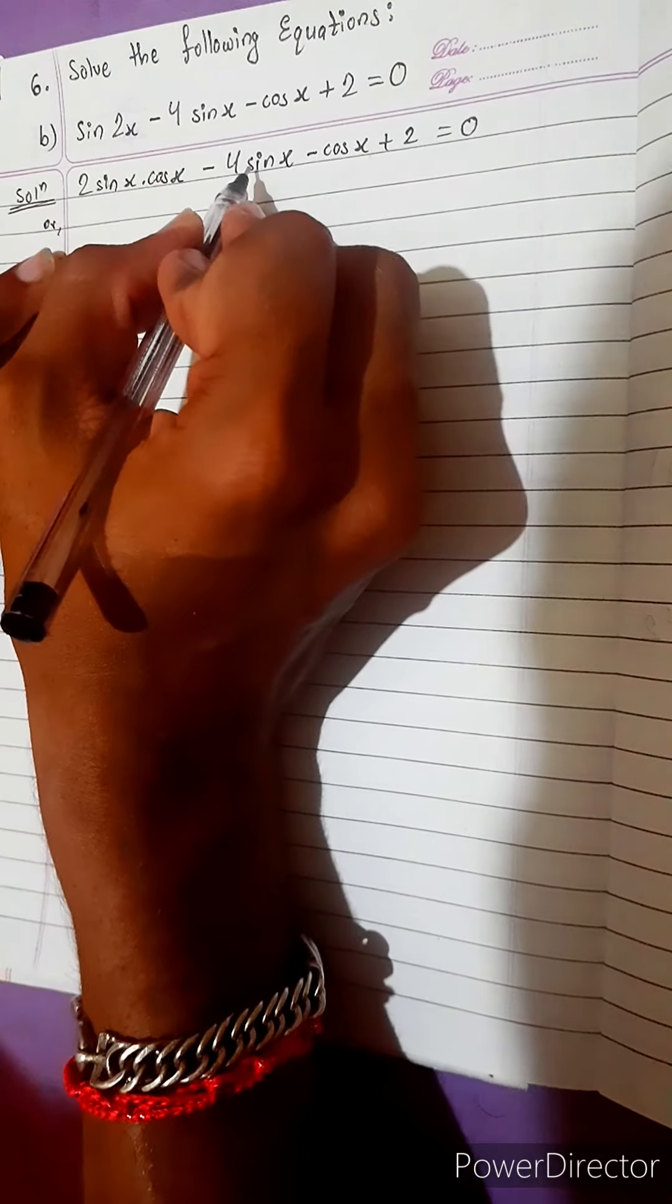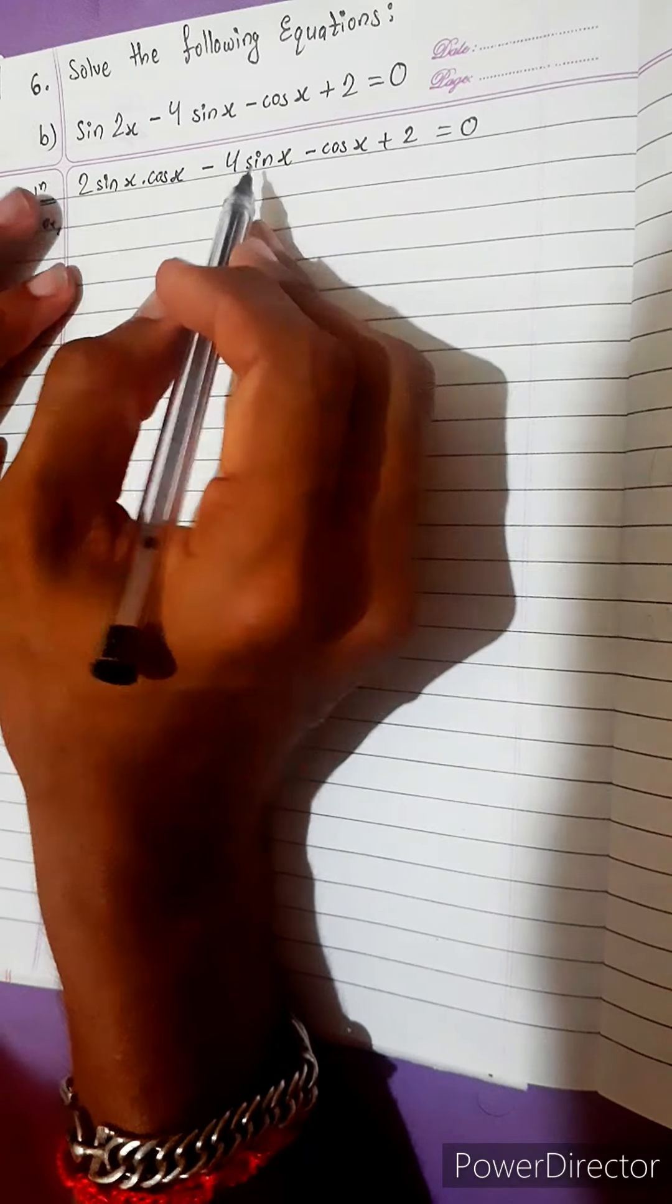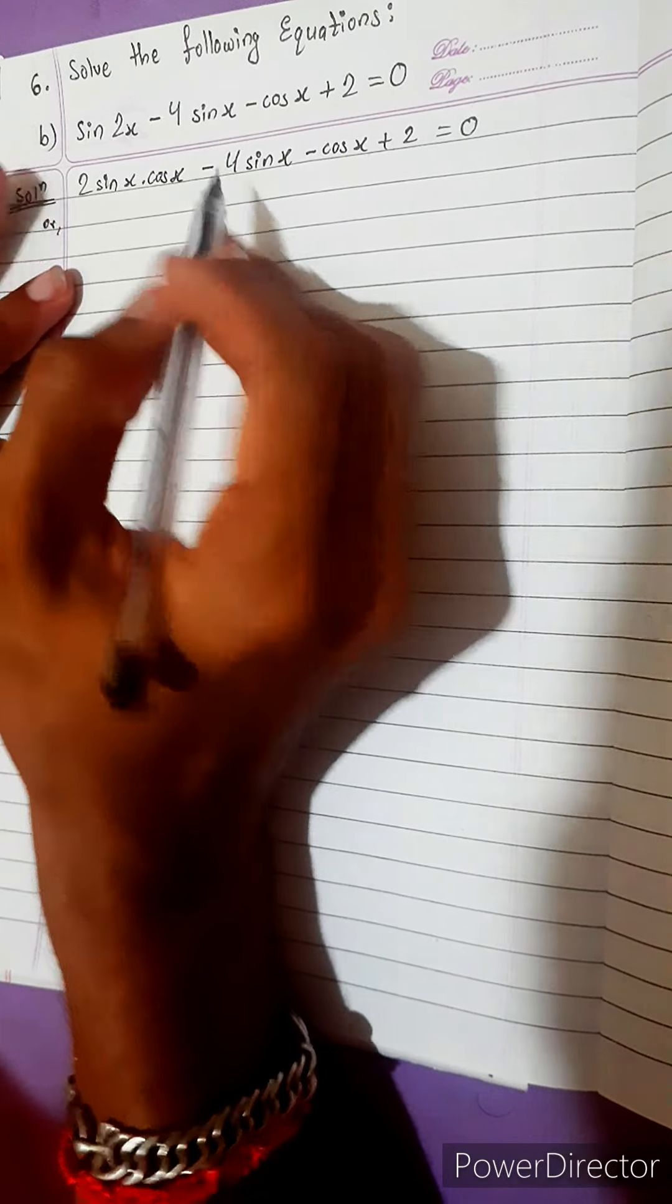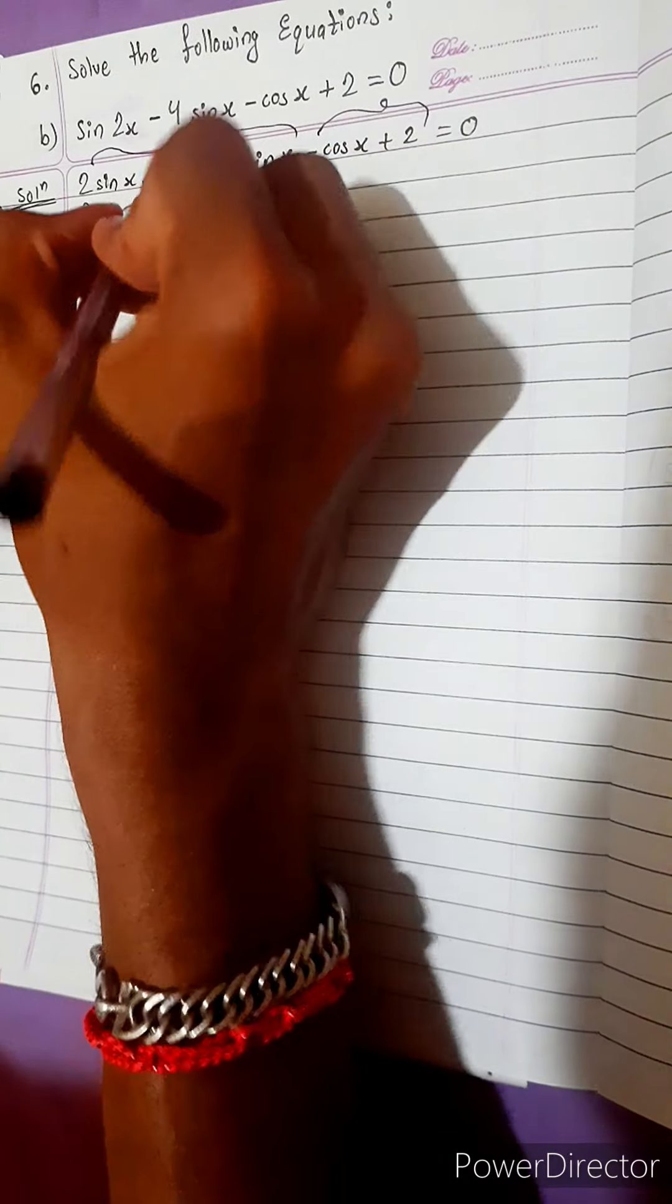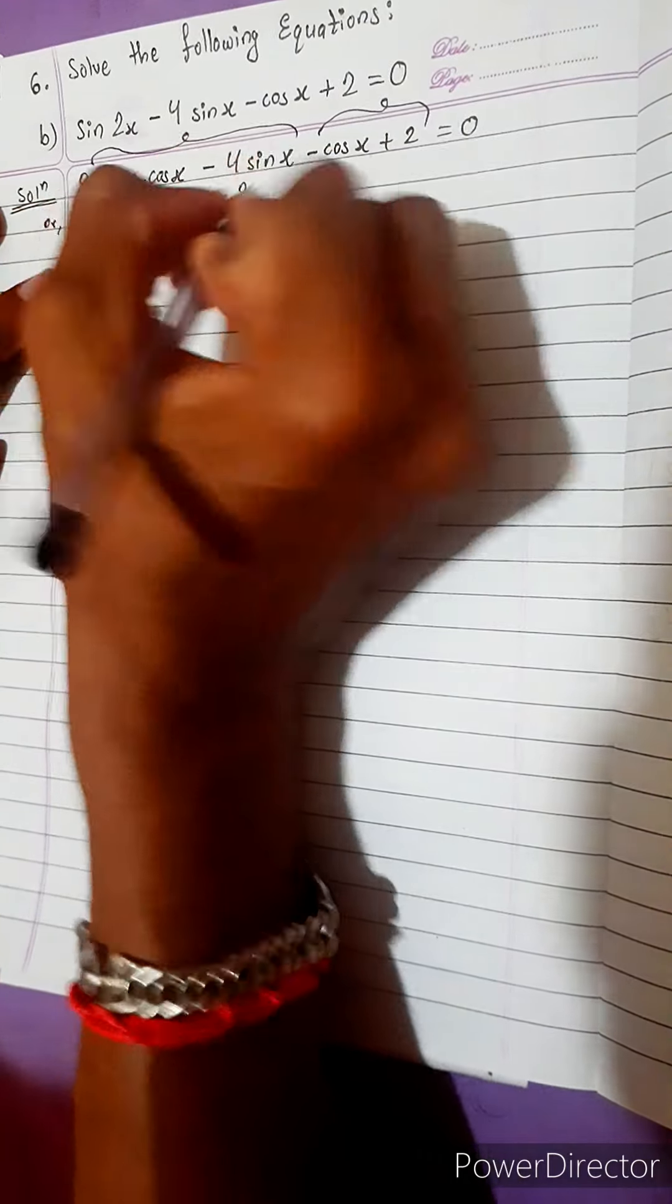Cos x plus 2 equals to 0. At first think inside mind, we can take common so that we can get again common later on. Here we can get 2 sine common. Let's try. Let's take 2 sine x common from these two terms. And from these two terms, remaining is cos x minus 2. Isn't it?